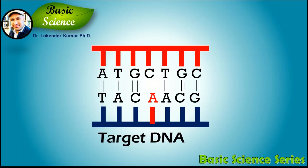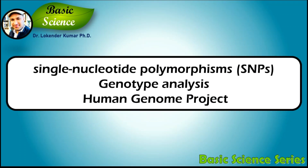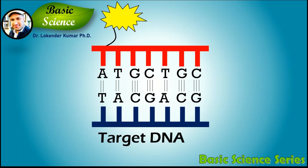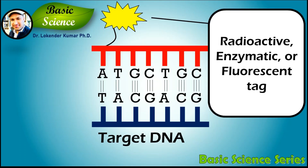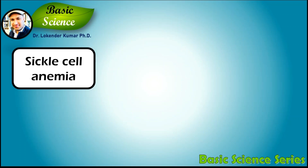These probes can usually be designed to detect a difference of as little as one base in the target DNA sequence — a basic ability in the assay of single nucleotide polymorphisms, important in genotype analysis and the Human Genome Project. To be detected after binding to the target, the ASO must be labeled with a radioactive, enzymatic, or fluorescent tag.